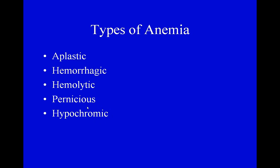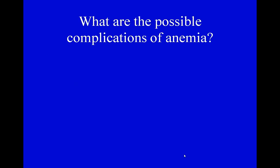Hypochromic anemia: the iron gave a red blood cell its color — chromic refers to color — so these red blood cells would be more pale. You could collect them in a test tube and they look more white than red. Hypochromic anemia is due to a lack of iron, usually in patients who lost blood through hemorrhage and couldn't recycle the iron.